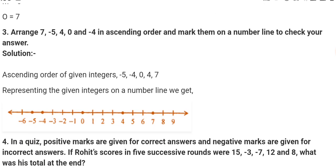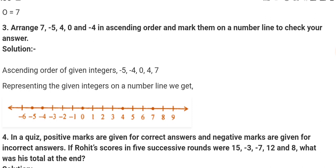Next question is arrange 7, minus 5, 4, 0, and minus 4 in ascending order. Big and small, the smallest will be minus 5, then minus 4, then 0, then 4, then 7. This is the required ascending order. So now you have to represent in number line to check your answer.